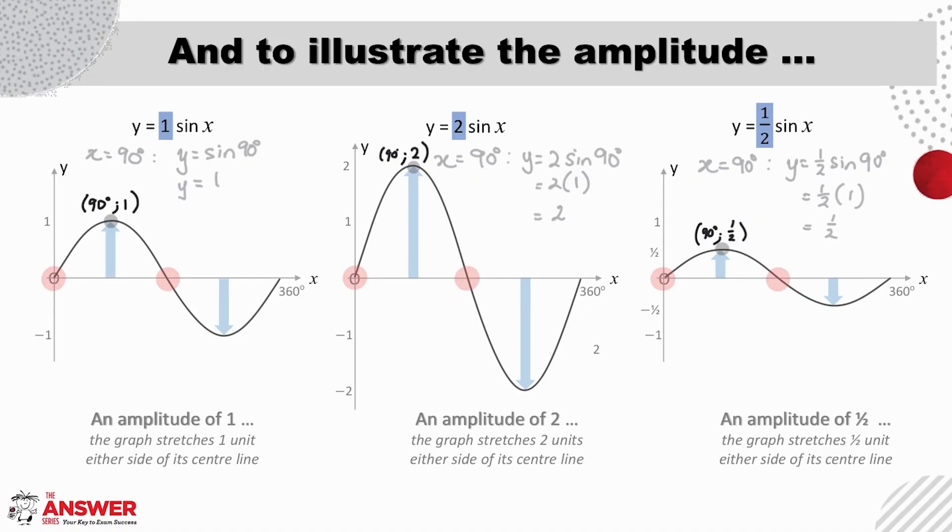This shows then nice and clearly that the coefficient of the ratio is in fact the amplitude of that graph. Let's think for a moment now about cos and tan. Sine and cos behave very similarly and so the thinking for the amplitude of cos will be similar. But for tan, it is different because tan doesn't have a maximum or minimum value. And this means that there is no amplitude for tan, but it is still helpful to notice the effect the coefficient of the ratio has on the sketching of tan.